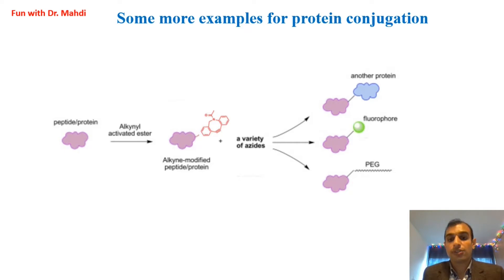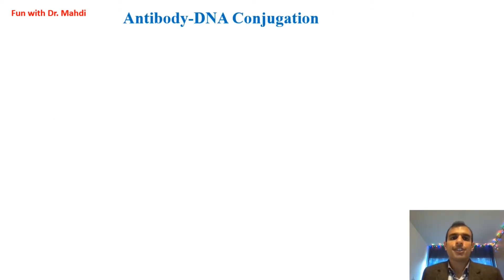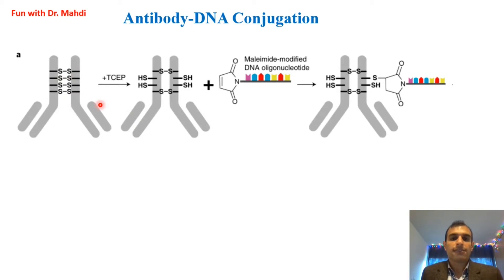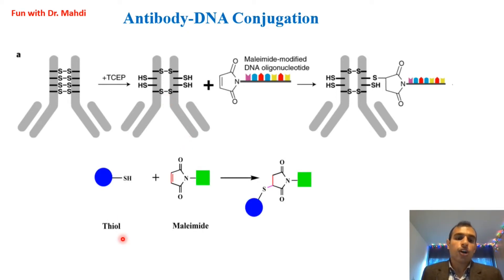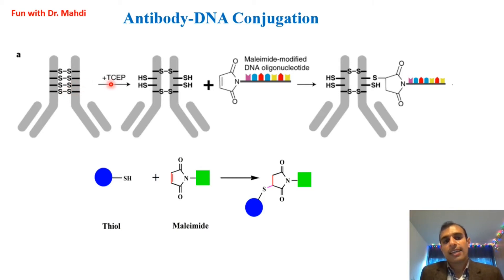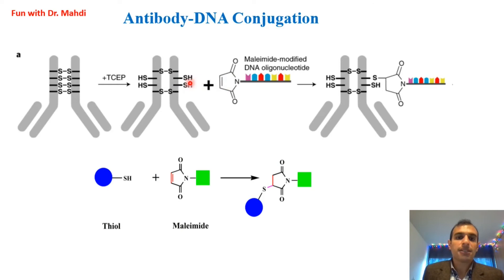The last example for bioconjugation is antibody-DNA conjugation — attaching DNA to an antibody using click chemistry. Here, we use thiol-maleimide Michael addition — a reaction between a thiol and a maleimide. We have an immunoglobulin antibody, and in its structure we have a disulfide bond. First, we use TCEP (tris(2-carboxyethyl)phosphine) to reduce the disulfide bond, giving us a thiol in the structure. In the DNA, we need a maleimide group. After the click reaction between the thiol in the antibody and the maleimide in the DNA, we have an antibody-DNA conjugate.